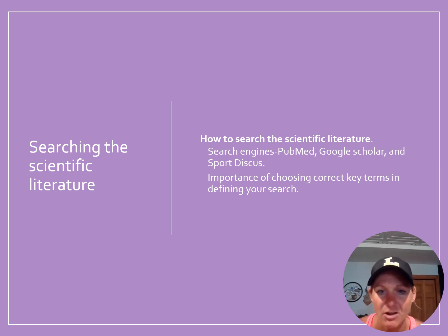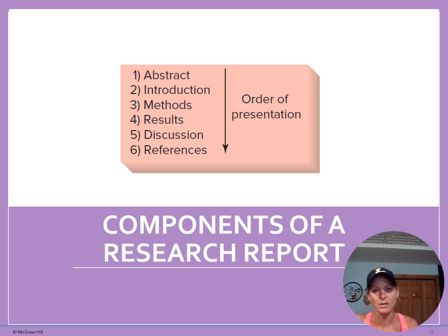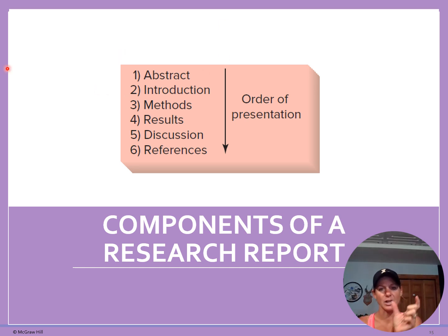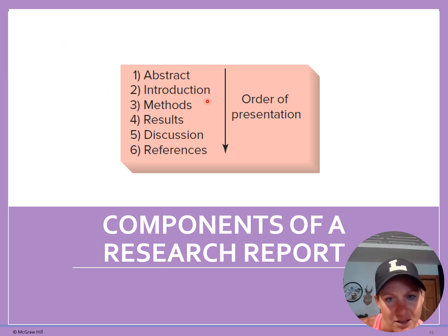We'll do some of that within this class in terms of finding scientific literature. Components of a research report — what are the things we're going to be reading? This is how they're all organized. Number one, you have the abstract, which is like a short summary of what you're going to learn in that particular article — just a one-paragraph overview that touches on each of the different topics.